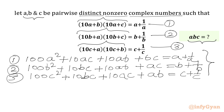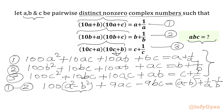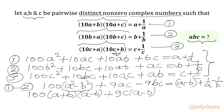Now we are going to perform equation 1 minus equation 2. So we write 100 in bracket A squared minus B squared. The 10AB terms cancel from both equations. We get 9AC from 10AC minus AC, and negative 9BC from BC minus 10BC. This equals A minus B plus 1 over A minus 1 over B. Now we use the difference of two squares formula, writing 100(A plus B)(A minus B) plus 9C(A minus B), which equals A minus B minus (A minus B) over AB.